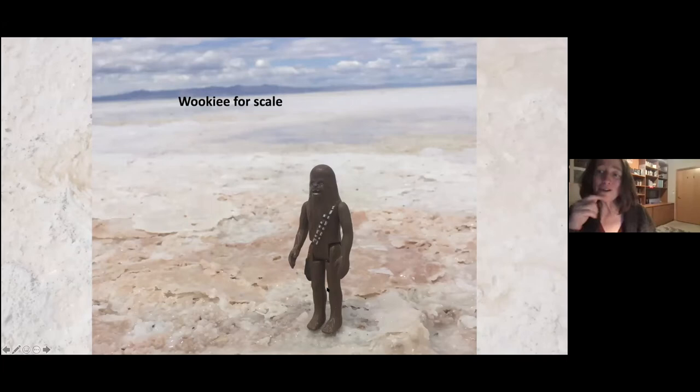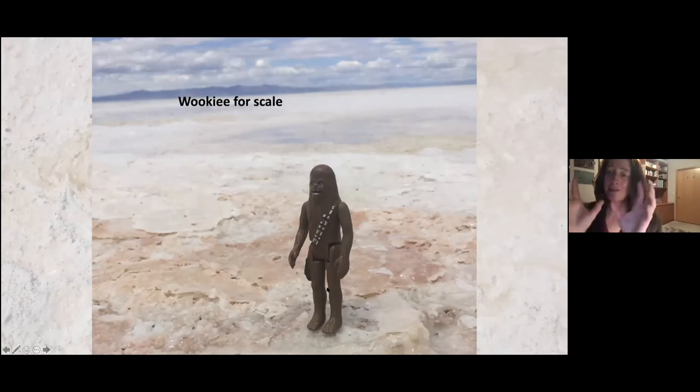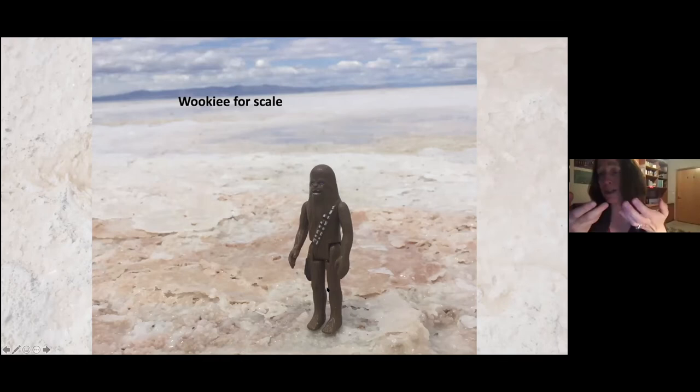The salt around the Wookie's feet is pink, which is common in hypersaline evaporite regions. The saltwater evaporated, getting saltier and saltier — only water goes into the water cycle, so the salts get left behind. That is what we think happened on Mars: as water evaporated, salts were left behind.